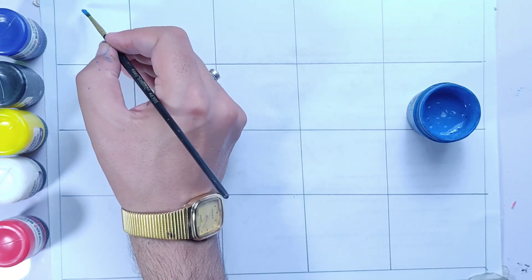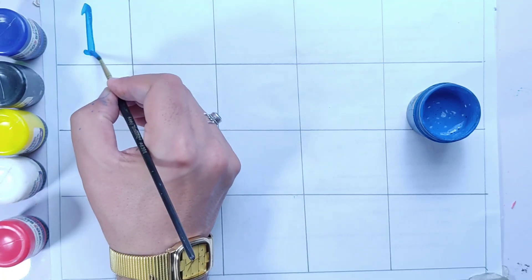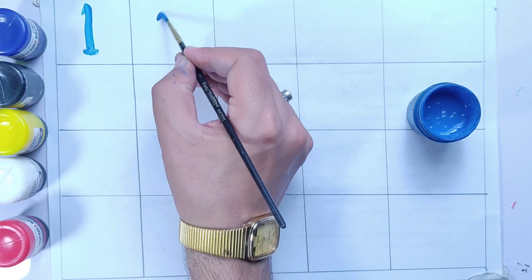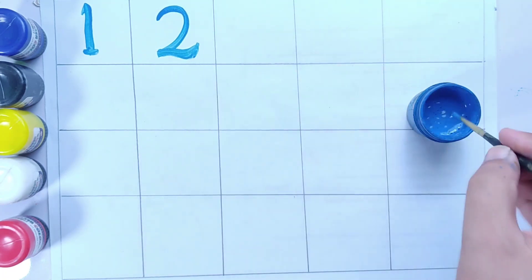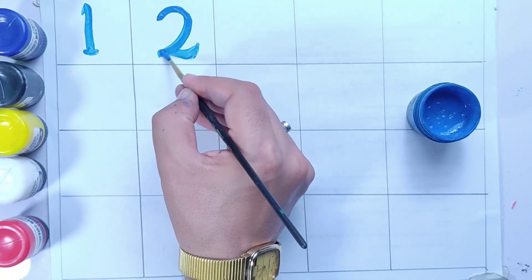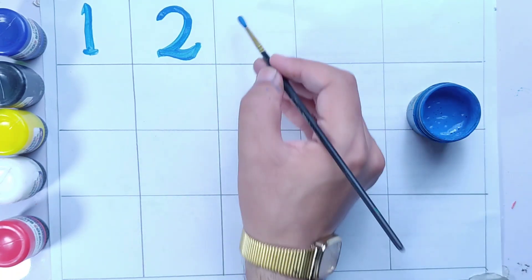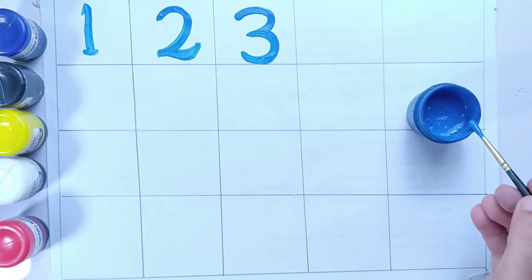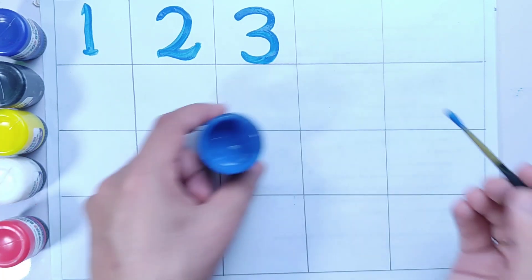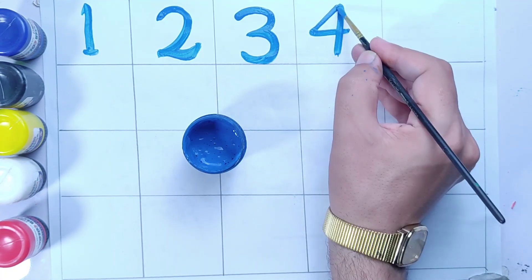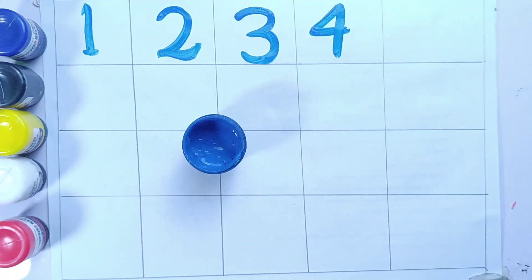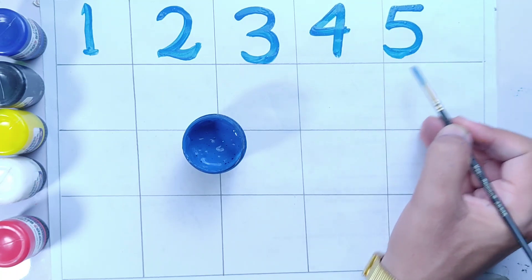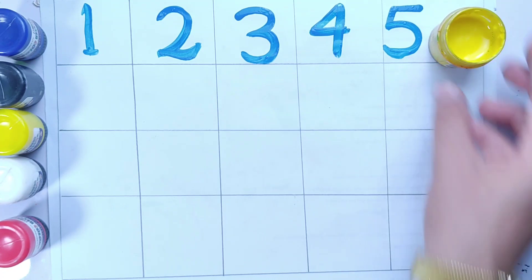This is number one, number one in dark blue color. Number two. Three, this is number three. Four. Five.